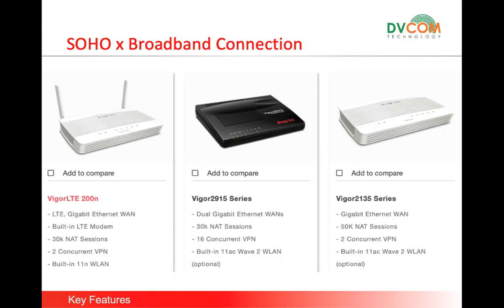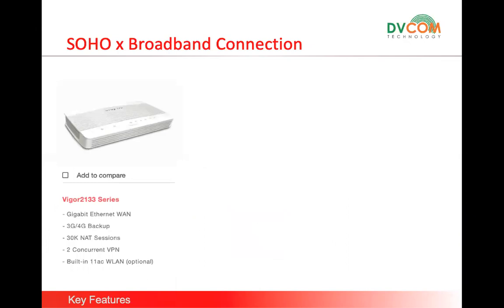The second one is the 2915 router, which supports dual WAN so you can terminate two internet connections, up to 30,000 NAT sessions, 16 VPN tunnels, and AC Wi-Fi technology with up to four SSIDs. The 2135 is a gigabit WAN router supporting up to 50,000 NAT sessions, two concurrent VPNs, and AC Wave 2 for wireless. The 2133 series is a gigabit Ethernet WAN supporting 3G/4G, 30,000 NAT sessions, two concurrent VPNs, and acts as an access point. These routers are suitable for small offices.